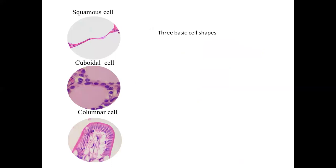You will be using three slides when you come for the practical. The first one, showing a squamous cell, is from lung tissue. Lung tissue is made of alveoli, which are lined by a single layer of squamous cells with a little connective tissue surrounding them. It is the thinnest epithelium — the nucleus is flattened out and it is built for exchange, as things can diffuse through this epithelia.